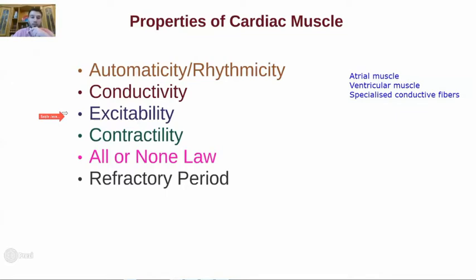Next up is contractility. Once the cardiac muscle is excited, the result is that it contracts. It has contractile proteins, and its muscle length shortens — the muscle contracts in response to depolarization. So contractility is another property of cardiac muscle. This brings us to an important concept: the all-or-none law.